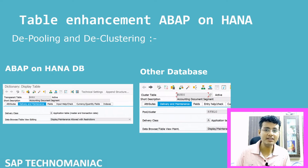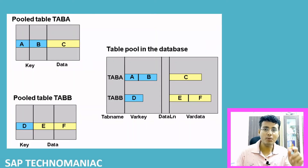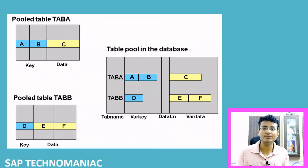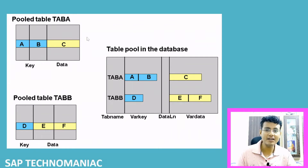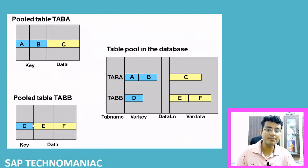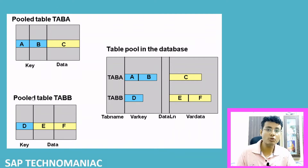The second table enhancement is depooling and declustering. If you don't know about pool tables and cluster tables — a pool table is a set of tables stored in the database together. At the application layer there are different tables, but in the database they are stored in one table. So a pool table is a collection of small tables. Suppose we have pool table A with key fields A and B and data field C, and pool table B with key field D and data fields E and F — those two tables are combined and stored in one database table.